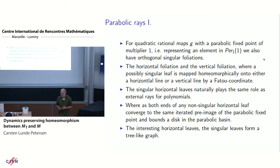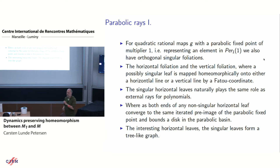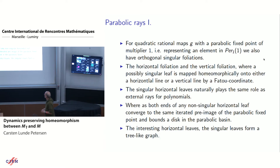It turns out that most of the horizontal leaves—all those that are regular leaves—are sort of boring. The only interesting leaves are the critical leaves. When I talk about a singular leaf, I mean a curve which maps onto the horizontal line through the critical values of the Fatou coordinate. So all the critical values of the Fatou coordinate—if you have a simply connected basin—lie on a unique line. If both critical points are attracted to infinity, you will have two lines. It's only the singular leaves that are interesting.